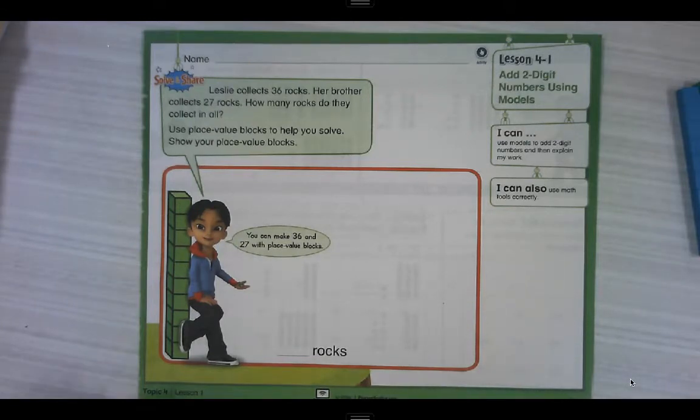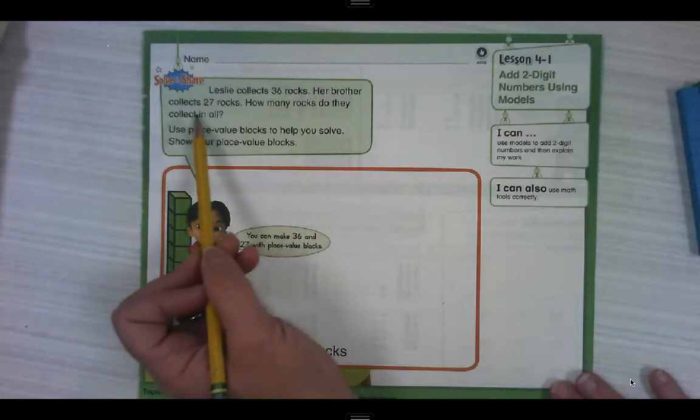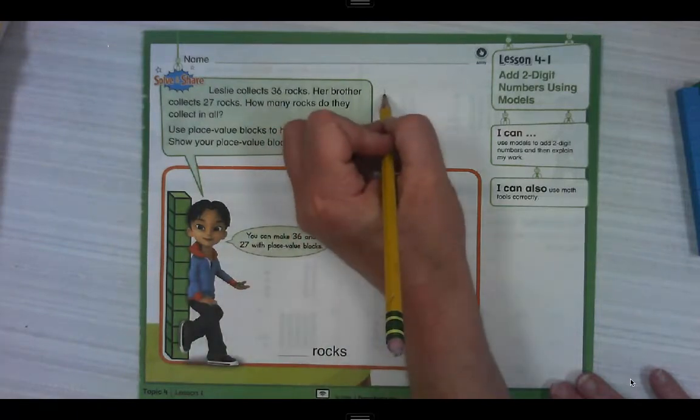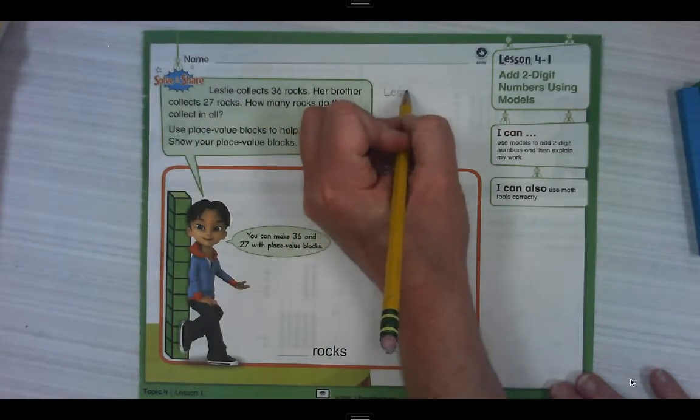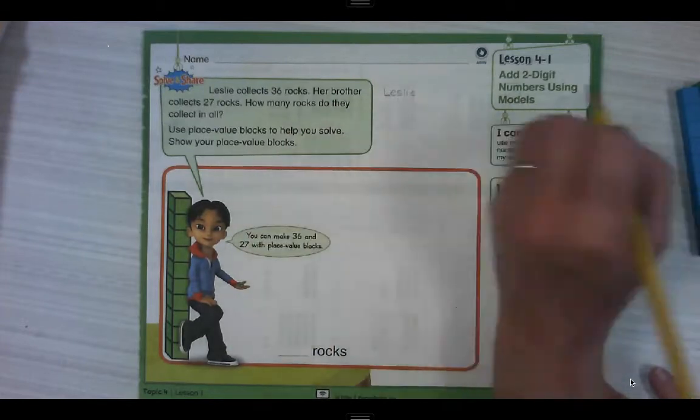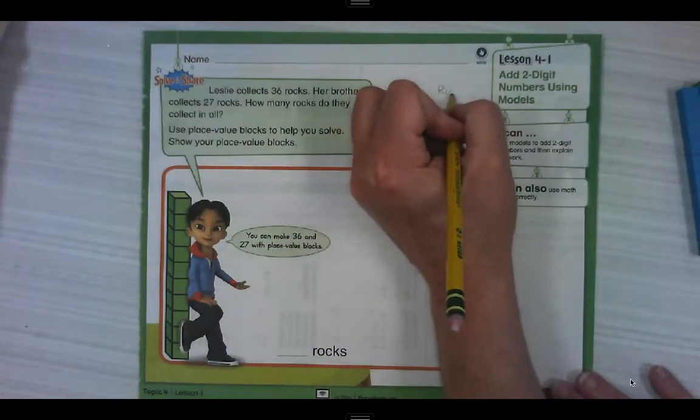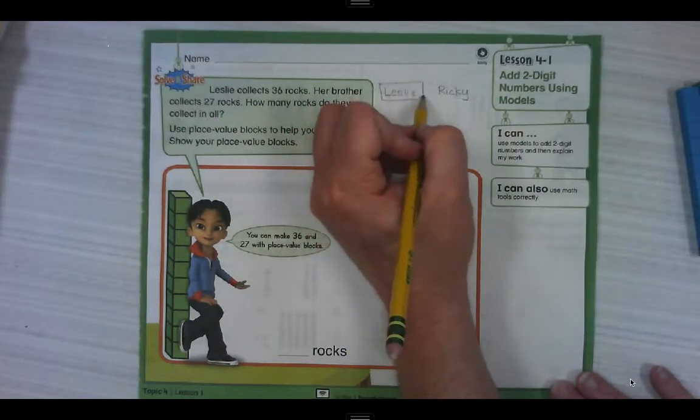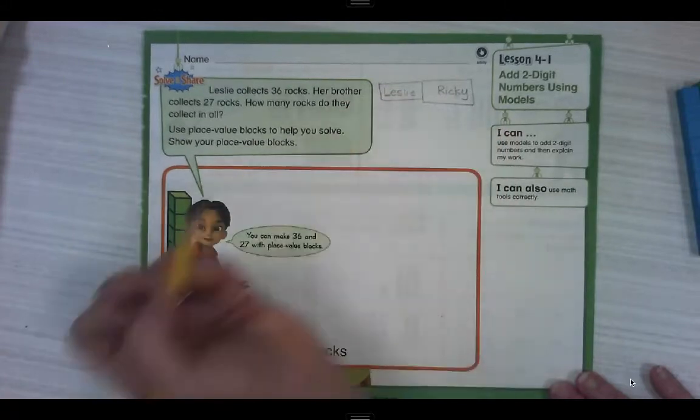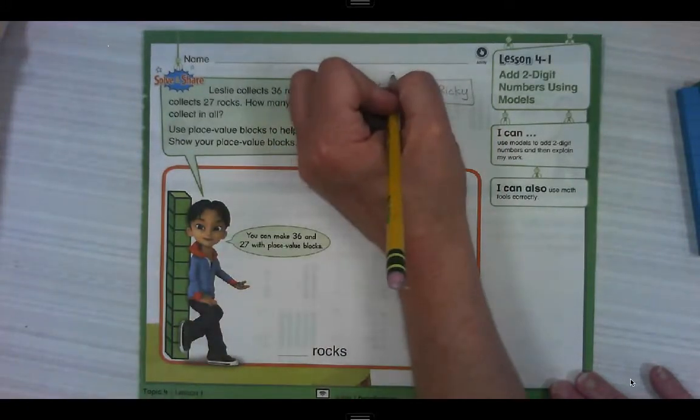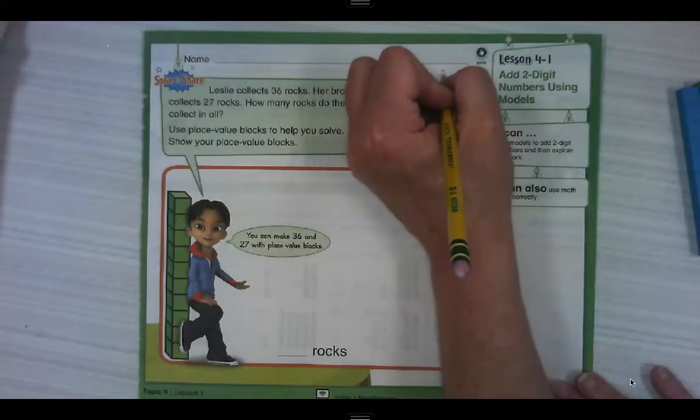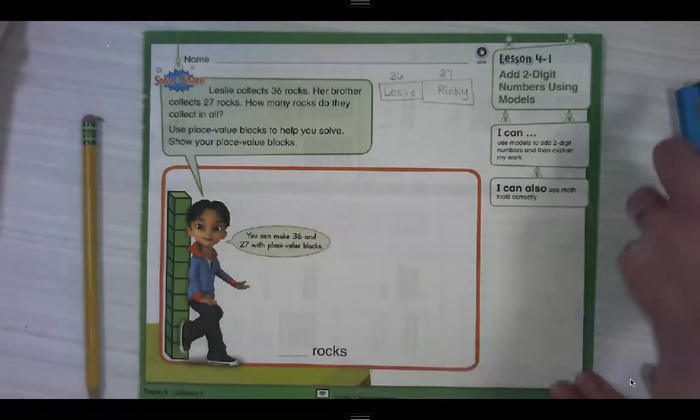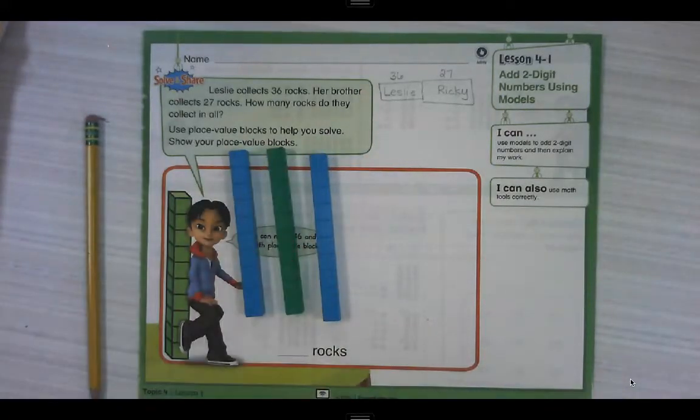Leslie collects 36 rocks. Her brother collects 27 rocks. How many rocks do they collect in all? So we have Leslie's rocks and we have her brother. Let's call him Ricky. And we're going to put all of their rocks together into one big bucket. Leslie's got 36 rocks and Ricky's got 27 rocks. We're going to use our place value blocks to solve this. So Leslie has 36 rocks. I need to model 36.